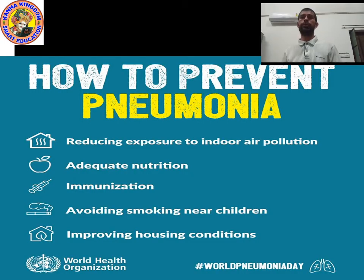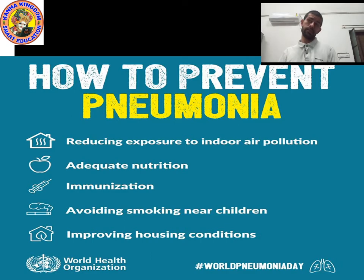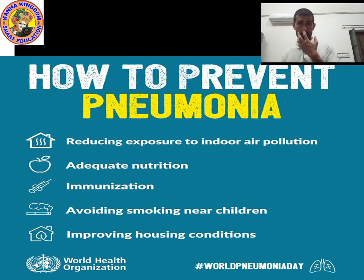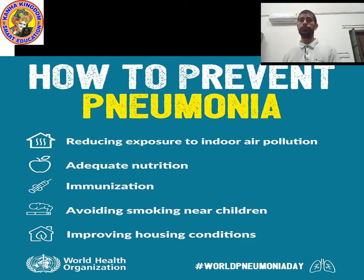How can we prevent pneumonia? Point one: reducing exposure to indoor air pollution — remove or reduce air pollution, because air pollution affects the lungs. Point two: adequate nutrition — you should eat a balanced diet with enough nutrients. You should eat properly and eat healthy food.